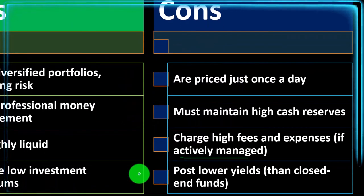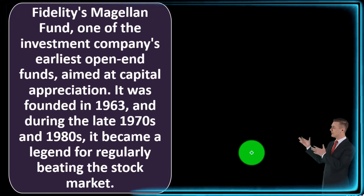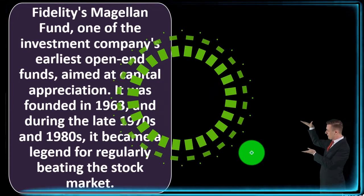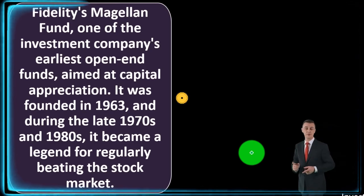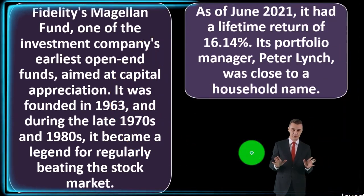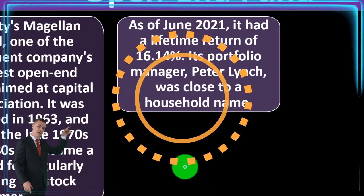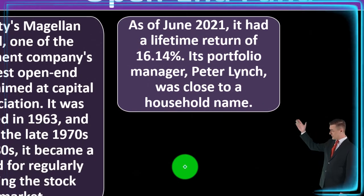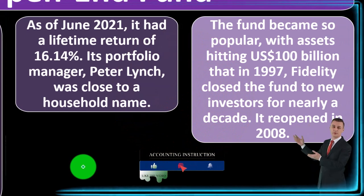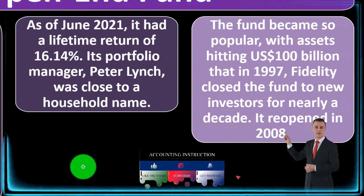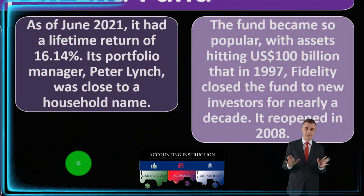A real-world example of an open-end fund is the Fidelity Magellan Fund, one of the company's earliest open-end funds, aimed at capital appreciation. It was founded in 1963, and during the late 1970s and 1980s it became a legend for regularly beating the stock market. As of June 2021, it had a lifetime return of 16.14%. Its portfolio manager, Peter Lynch, was close to a household name. The fund became so popular — with assets hitting $100 billion — that in 1997, Fidelity closed the fund to new investors for nearly a decade. It reopened in 2008.